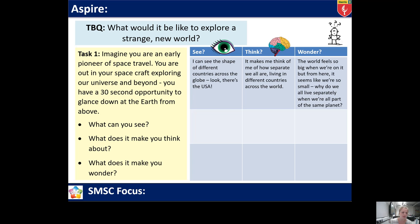For example, you might see the shape of different countries across the globe and spot countries you recognise — look, there's the USA. That might make you think about how separate we all are: we all live on one planet but in different countries. And that might make you wonder — the world feels so big when we're on it, but from up in space looking down, we seem so small. So why do we all live separately when we're all part of the same world? Please pause and complete this table, then press play when you're ready to move on.